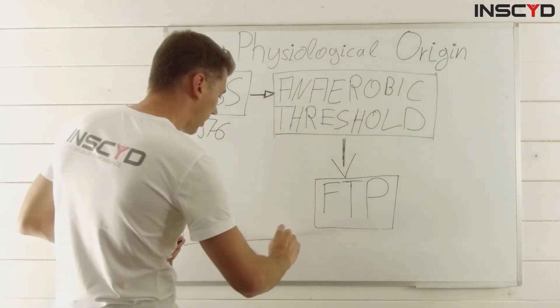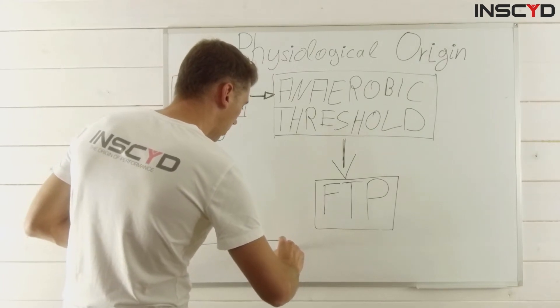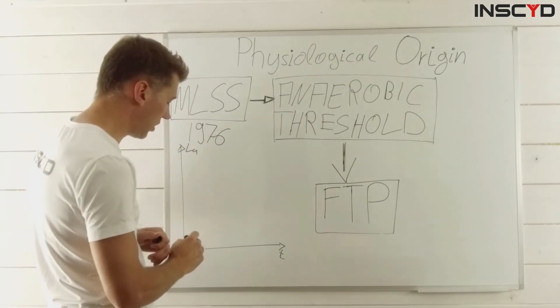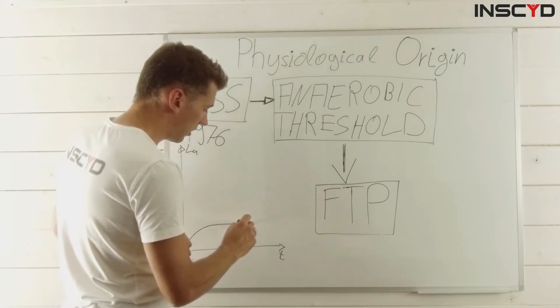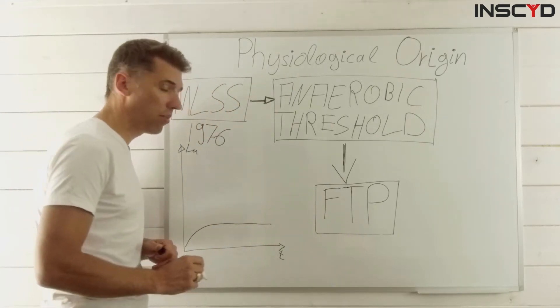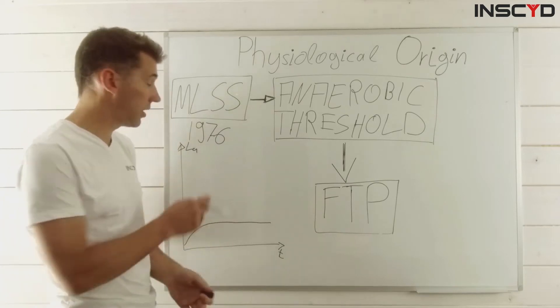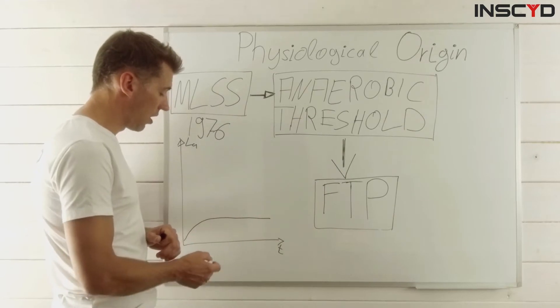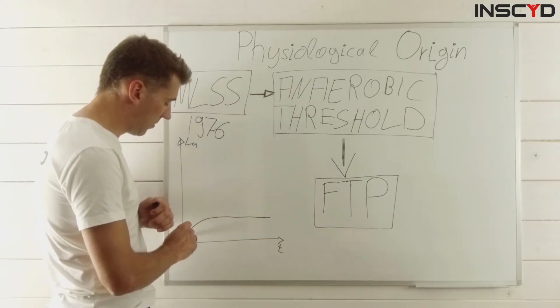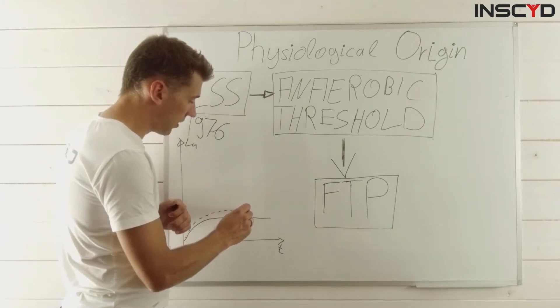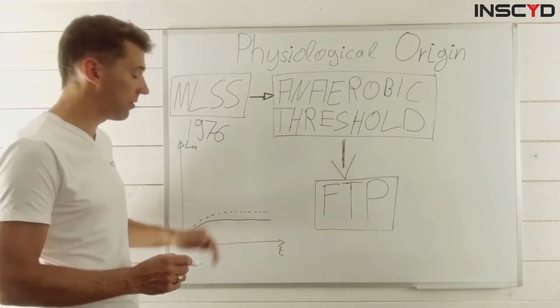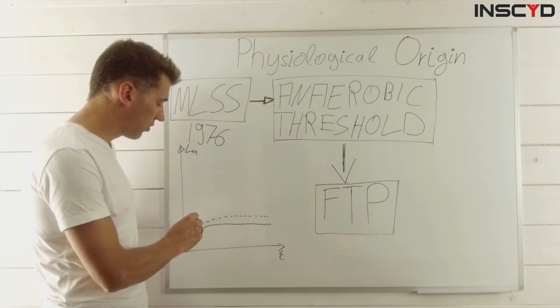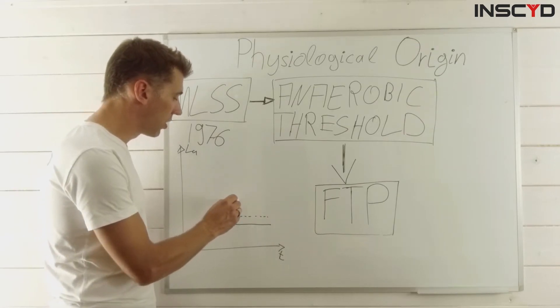So if you look at time, minutes, and the lactate concentration, at a certain intensity, the lactate concentration in the blood, measured in the earlobe, or in this time actually at the finger, would stabilize. And when you increase the intensity, the lactate concentration might still stabilize, but on a higher level. And at a certain intensity, lactate values would not stabilize anymore, but kind of increase.